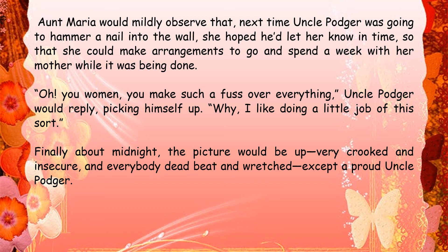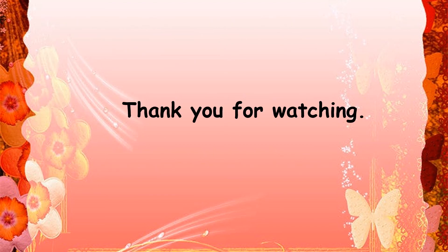'Oh you women, you make such a fuss over everything,' uncle Podger would reply, picking himself up. 'Why, I like doing a little job of the sort.' Finally, about midnight, the picture would be up — very crooked and insecure — and everybody dead beat and wretched, except a proud uncle Podger. 'Crooked' means not straight, 'insecure' means it might fall down any time. Everyone is exhausted except a very proud uncle Podger. I hope you understood the chapter. Thank you for watching and have a nice day.